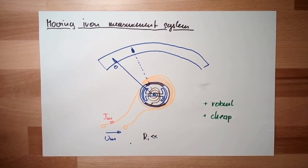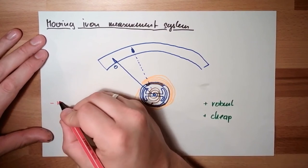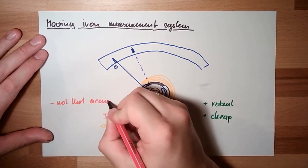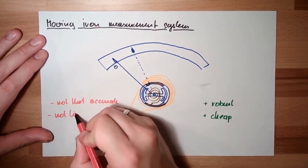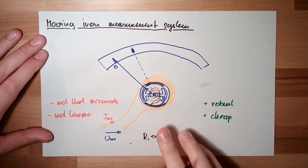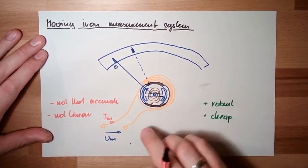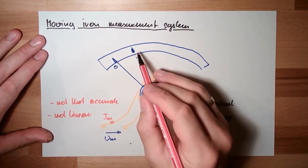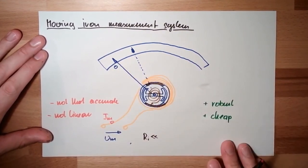On the negative side, it's not that accurate. It's not linear. So the force here is relative to I-squared. The scale needs to be a square scale, not a linear scale.